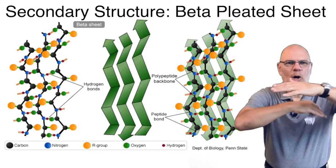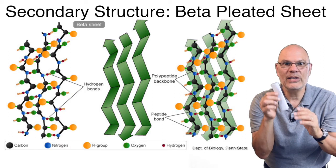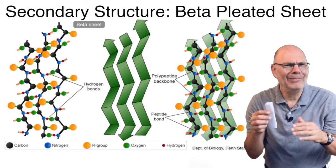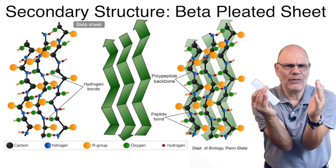And that allows the carbonyl and amino groups that are in the different parts of the chain to interact, forming this kind of pleat. Now, how could the polypeptide chain fold back on itself or become parallel?